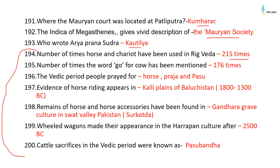The word 'go' for cow has been mentioned 176 times in the Rigveda. The Vedic period people prayed for horse, praja, and pashu. Evidence of horse riding appears in the Kili Gul Muhammad plains of Balochistan, dating to 1800 to 1300 BC. Remains of horse and horse accessories have been found at the Gandhara grave culture in Swat Valley, Pakistan, at Sarkododa. Wheeled wagons made their appearance in the Harappan culture after 2500 BC. Cattle sacrifices in the Vedic period were known as Pashubandha.